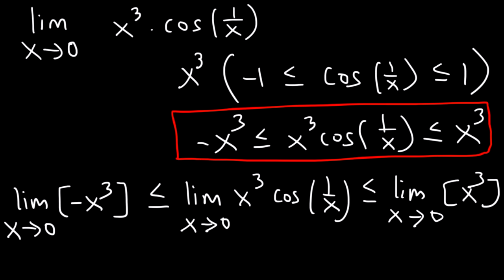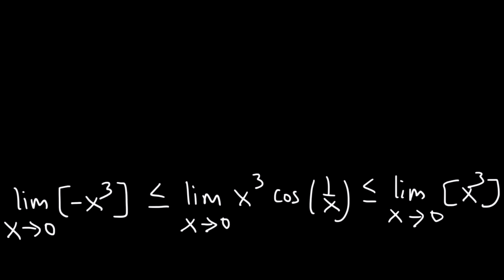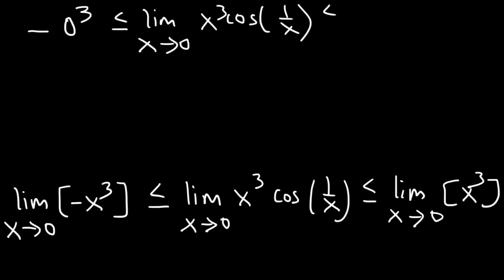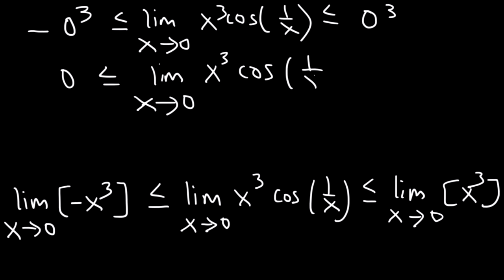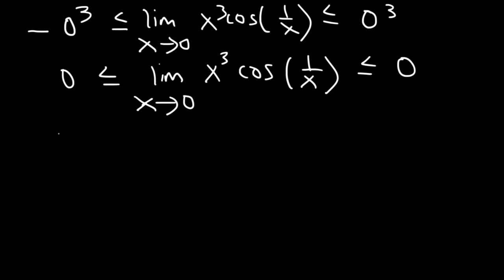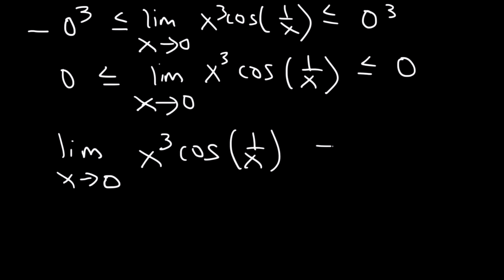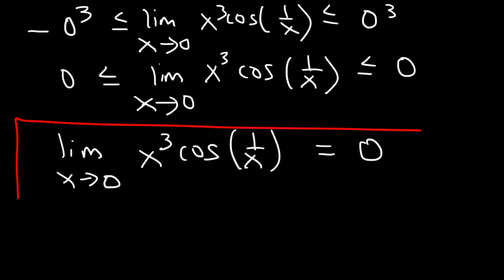Substituting x with 0, the left side gives negative 0 cubed, which is 0, and the right side gives positive 0 cubed, which is also 0. Since the limit of f(x) is greater than or equal to 0 and at the same time less than or equal to 0, there's only one possible answer: it equals 0. So the limit as x approaches 0 of x³·cos(1/x) equals 0. And now you know how to apply the squeeze theorem — hopefully these examples were enough to help you understand this material.